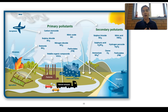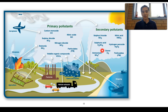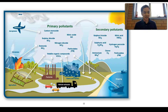Primary pollutants include carbon monoxide, sulfur dioxide, nitric oxide, nitrogen dioxide, and volatile organic compounds, which we can think of as unburnt hydrocarbons. Secondary pollutants include sulfuric acid, nitric acid, and ozone, which we'll discuss in detail. Sometimes primary and secondary pollutants overlap — for example, nitrogen dioxide can be directly emitted, making it a primary pollutant, but it can also be formed through reactions of primary pollutants like nitric oxide, making it secondary as well.